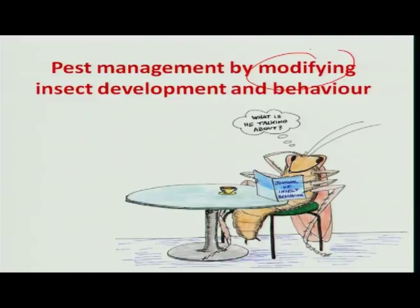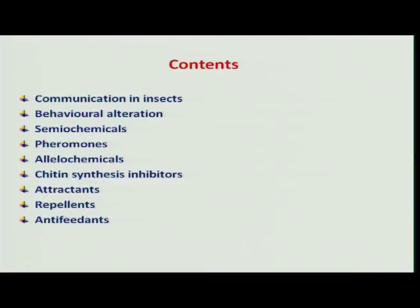Hello friends. Now we will discuss another important component of IPM — pest management by modifying insect development and behavior through both natural and synthetic chemicals. In this lecture, I am going to deal with communication in insects, behavioral aspects of insects, semiochemicals and pheromones, allelochemicals, chitin synthesis inhibitors, attractants, repellents, and antifeedants.